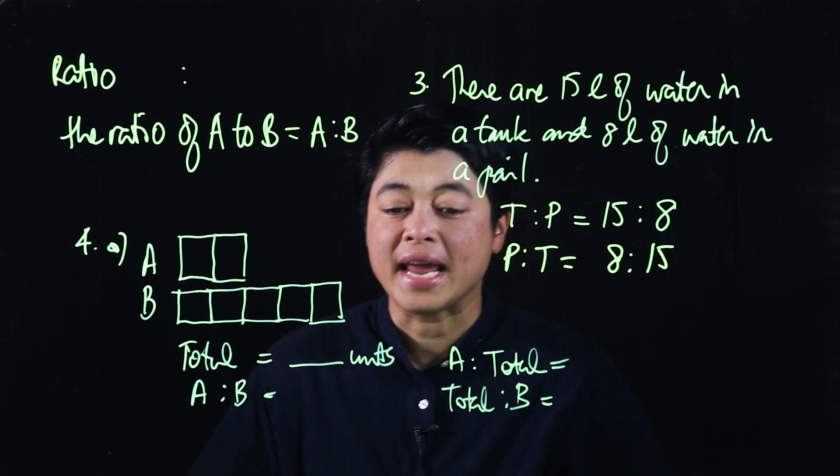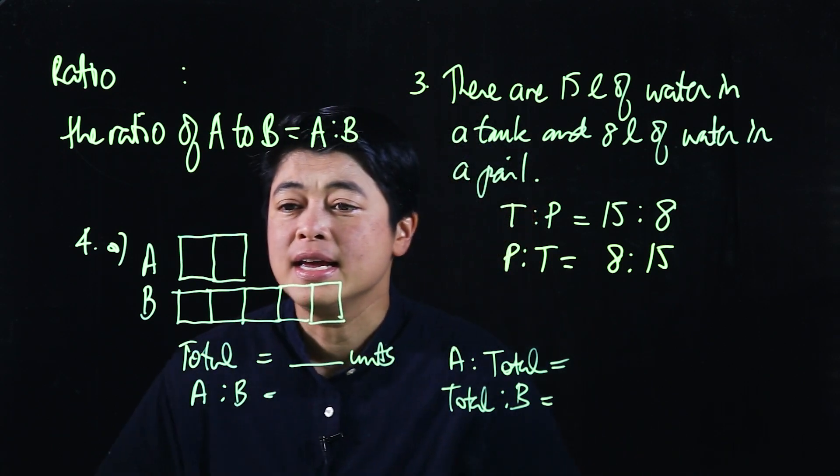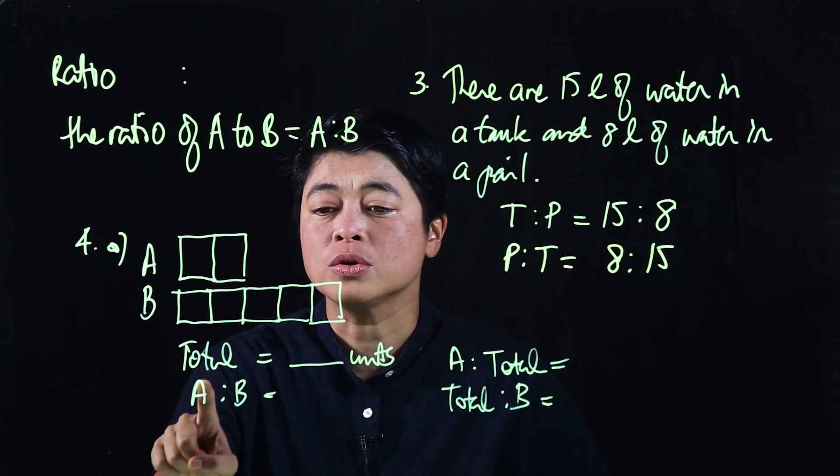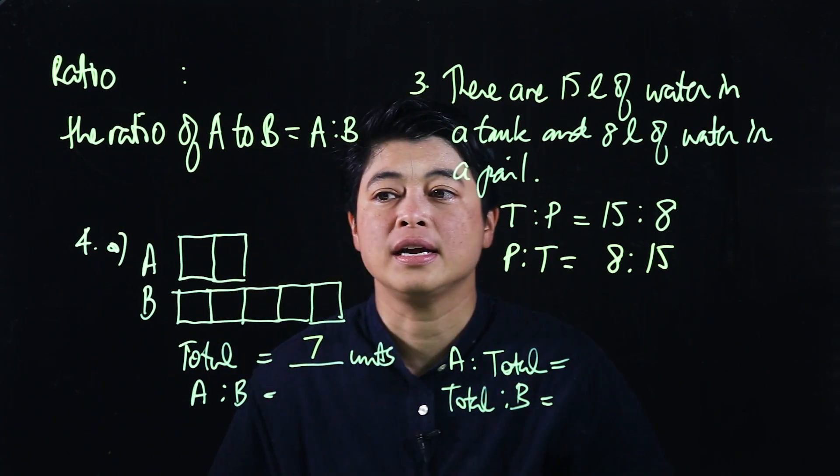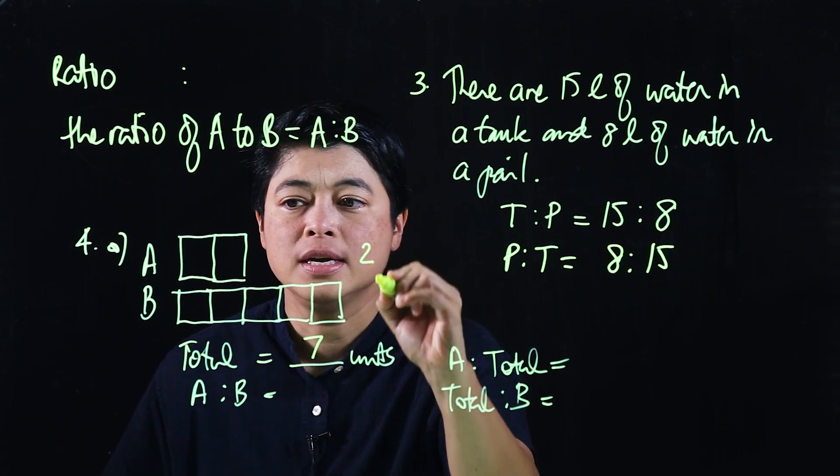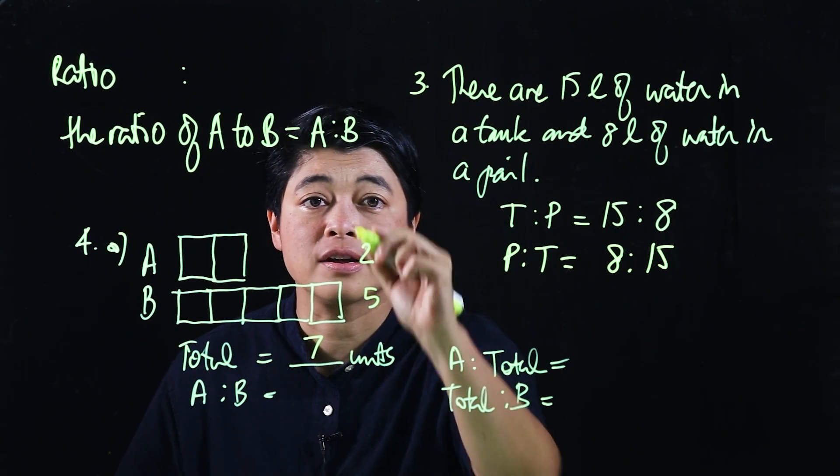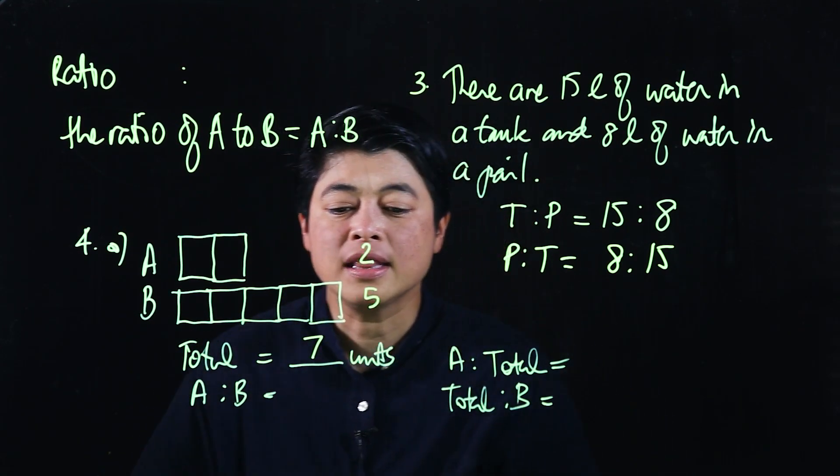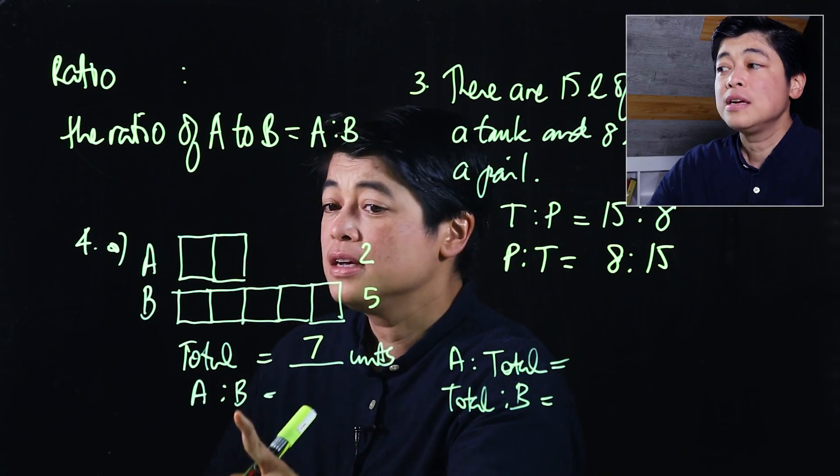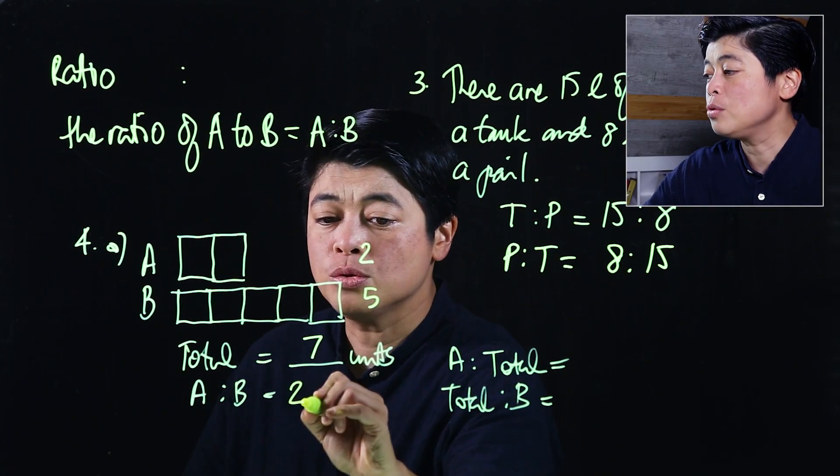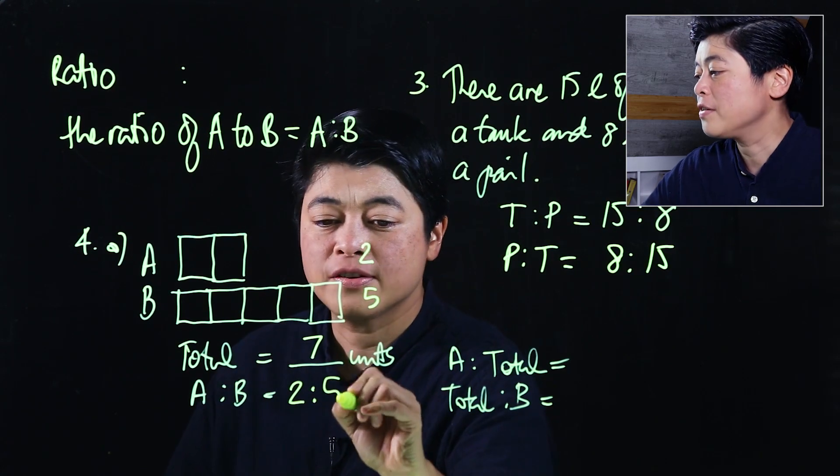Another example is 4a. In 4a, the total would be seven units. This has two and this has five, so together that's seven. The question asks, what is the ratio of a to b? The ratio of a, which is two, to b, which is five, is 2:5.